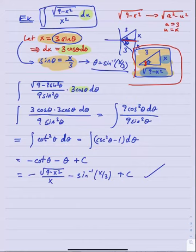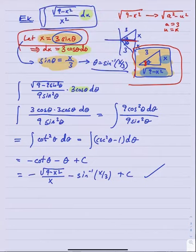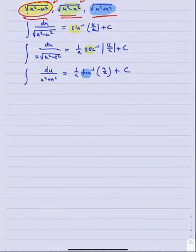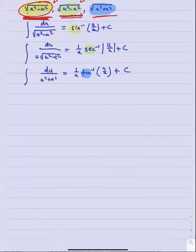You can see the procedure is the same every time - the only thing that changes is the nature of the substitution, which depends on which of the three forms we're looking at. We've looked at how to handle square root of a squared minus u squared. Now let's handle square root of u squared minus a squared. Since that looks similar to the form whose antiderivative involves secant inverse, that suggests we need a secant substitution.